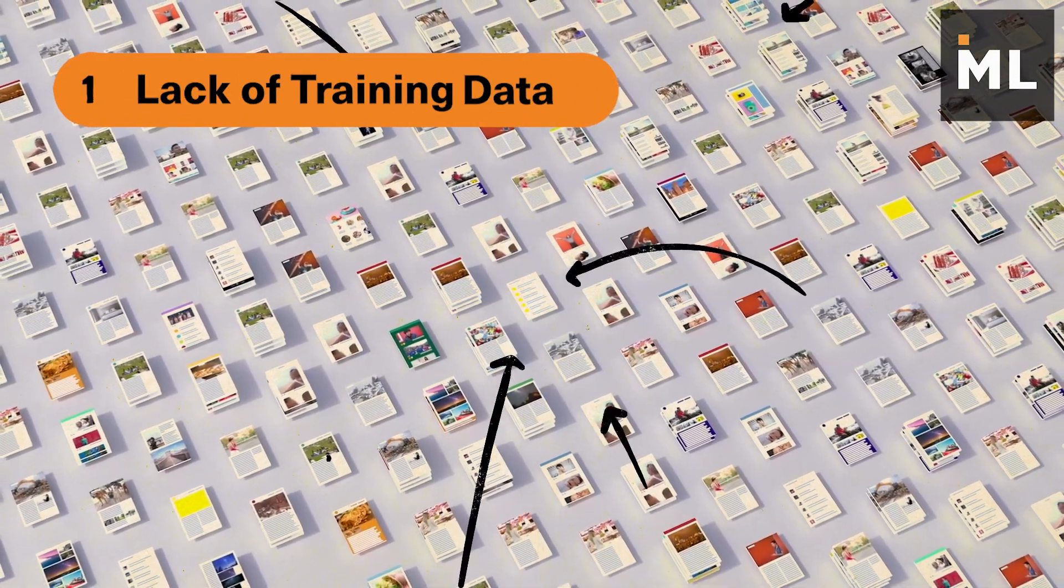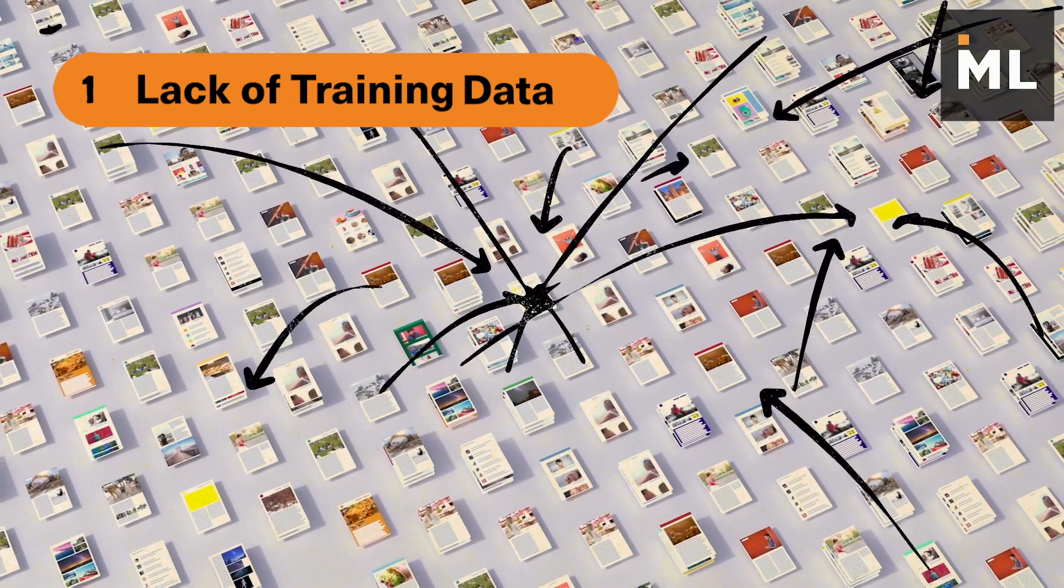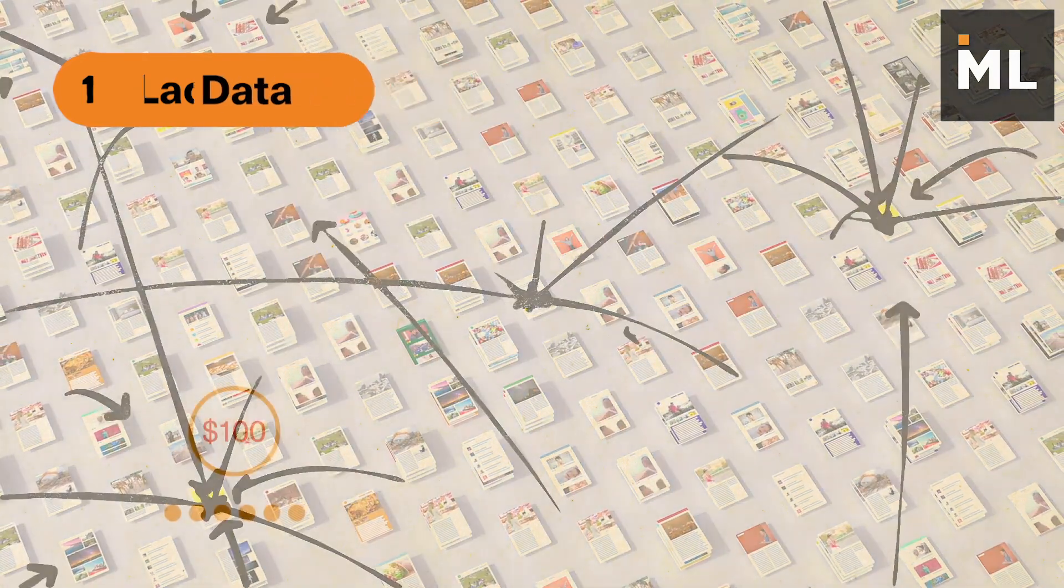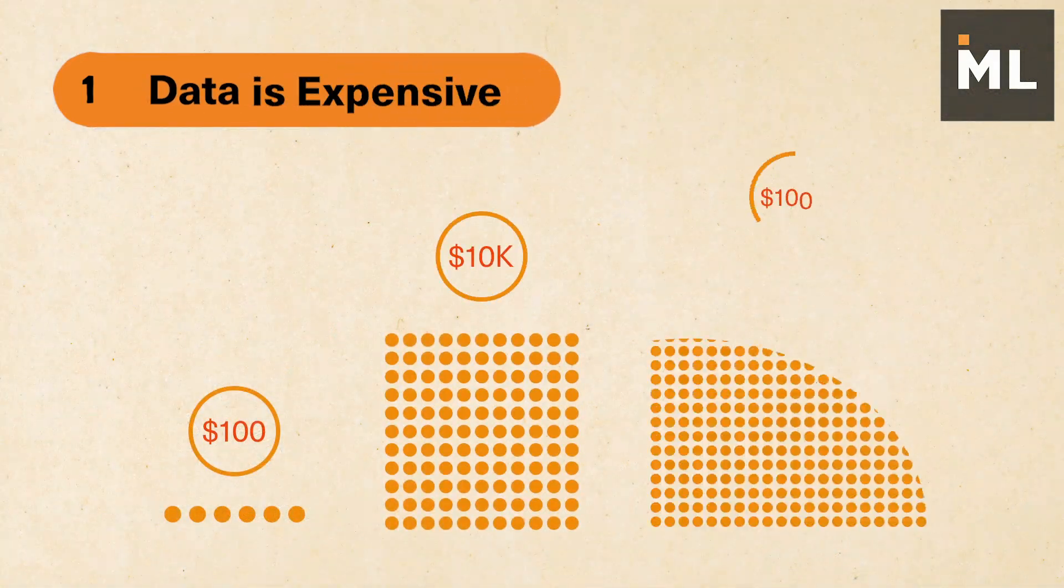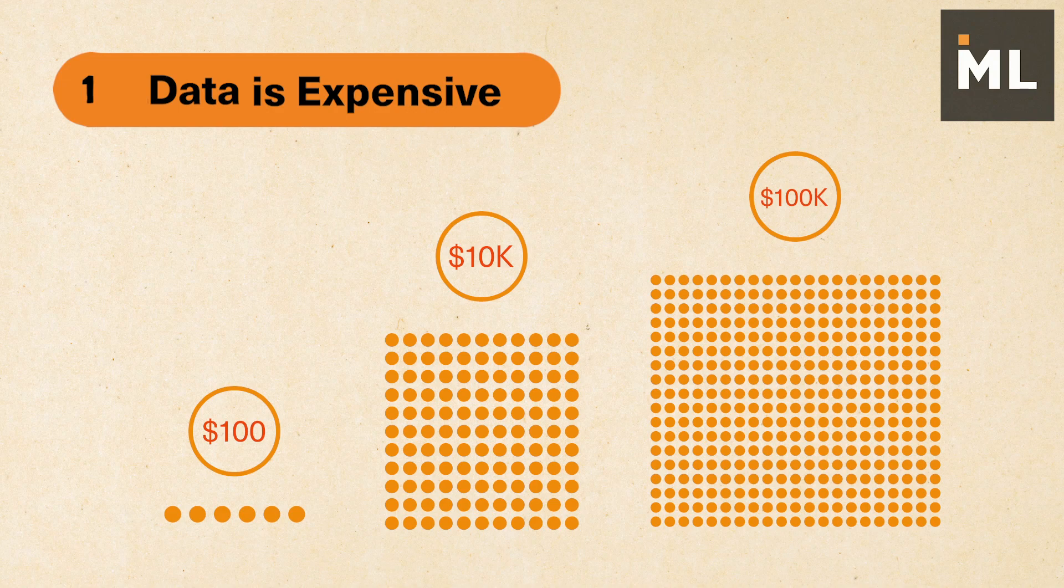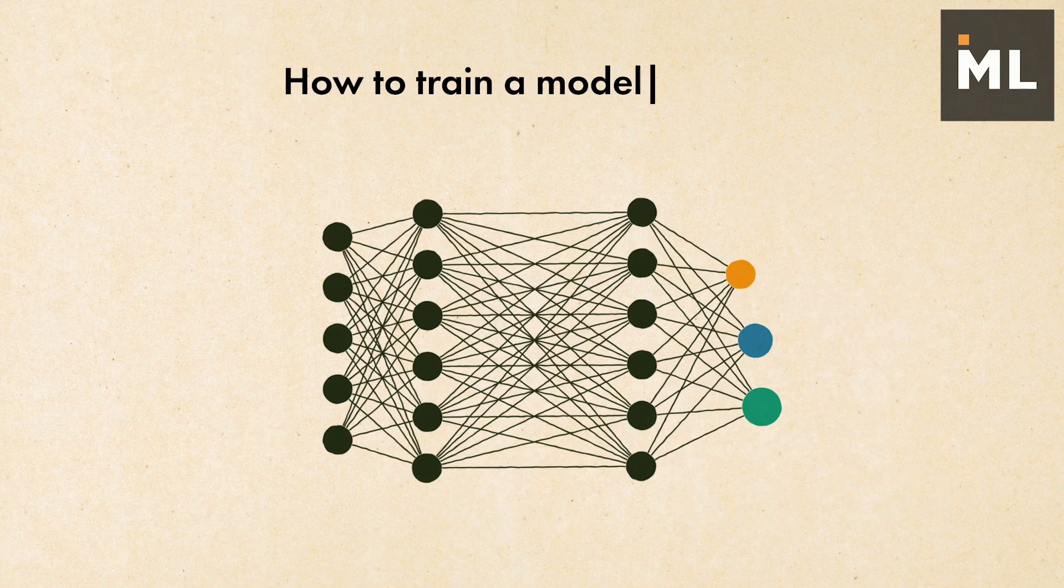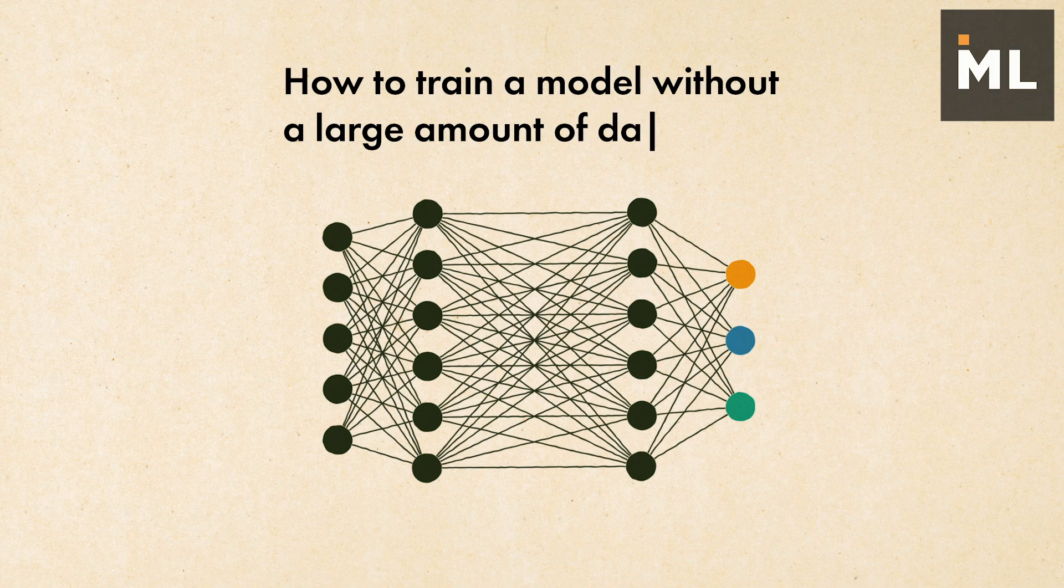The first challenge is lack of training data. Data is at the core of any machine learning project; however, it's usually very hard and expensive to obtain labeled data. How to train a model without large amounts of data is a hot topic today.